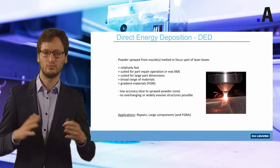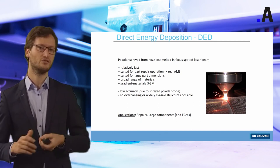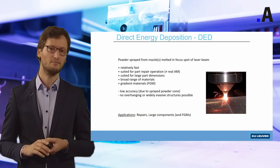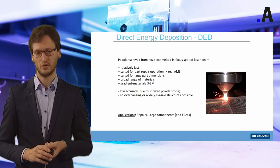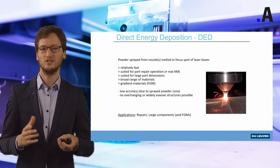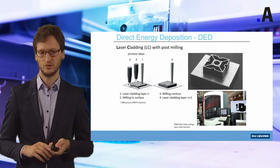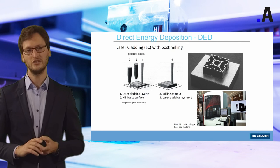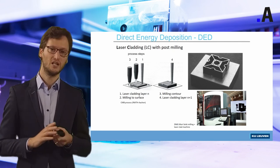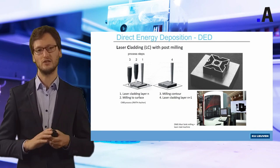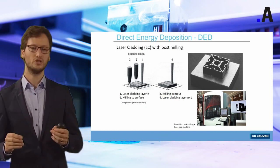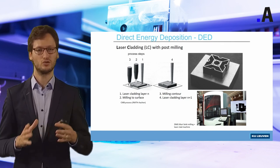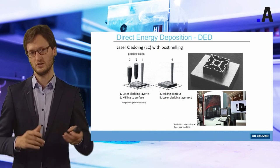DED is suited for very large components and a broad range of materials, even gradient materials where different chemical compositions are used at different locations. The disadvantages are that accuracy is quite low, layers are very thick and visible to the naked eye, so post-machining is often required. No overhanging structures are typically possible. In practice, this technology is mainly used for repairs and very large components. A more recent development integrates both direct energy deposition and conventional subtractive machining — a part is built using additive manufacturing, and then conventional milling is used to make the surface smoother. Combining the advantages of both technologies provides a solution that is much more economically interesting than either technique on its own.